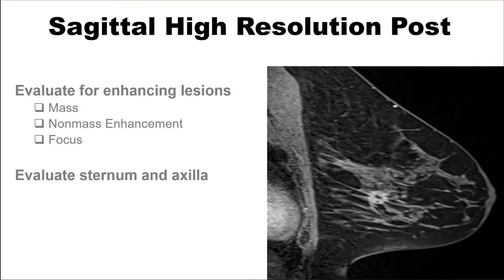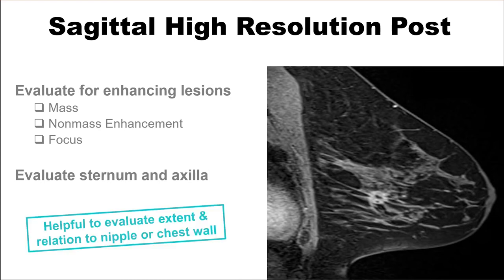On the sagittal high-resolution post-contrast images, evaluate for enhancing lesions — looking for masses, non-mass enhancement, and foci of enhancement. The sagittal images are particularly important because most MRI-guided breast biopsies are performed using the sagittal projection. The sagittal images are also particularly good for evaluating the sternum and axilla. Use this sequence to look at the extent of disease and relationship of the malignancy to the nipple or chest wall.